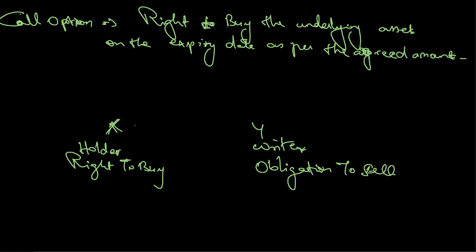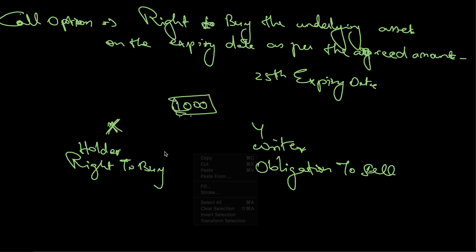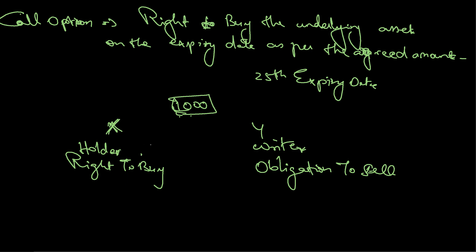X will buy when he believes the price will shoot up beyond the agreed price. Both parties enter into a contract where X agrees to buy at the rate of 1000 rupees on the day of expiry. In India, the last Thursday of the month is the expiry date, so let's say expiry is on the 25th.